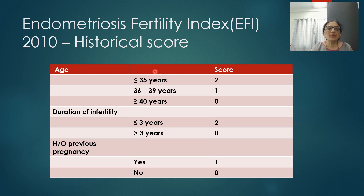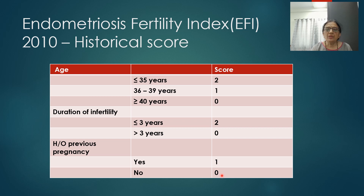For the historical score: age less than or equal to 35 scores 2; age 36–39 scores 1; age 40 or above scores 0. Duration of infertility more than 3 years scores 0; less than or equal to 3 years scores 2. History of previous pregnancy scores 1; no such history scores 0. Maximum historical score is 5.